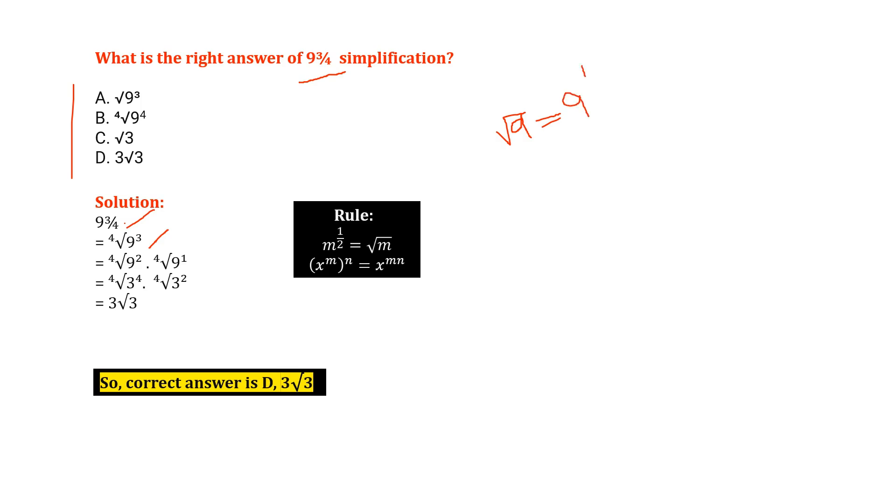So using the same technique, we write down here 4th root 9 power 3. Then the next line we write down 4th root 9 square into 4th root 9 power 1. So how we get it?